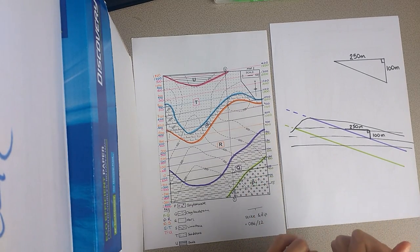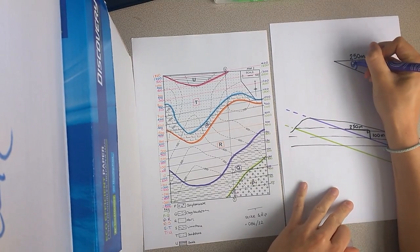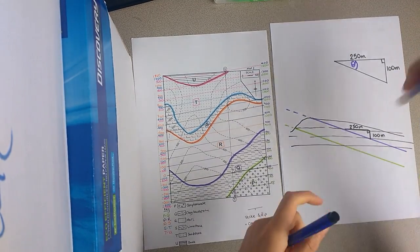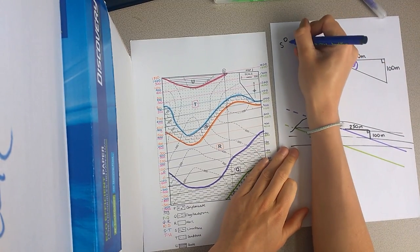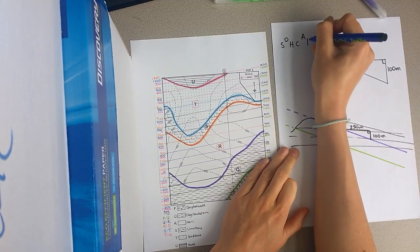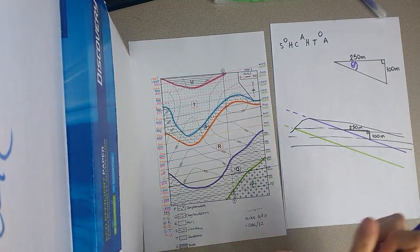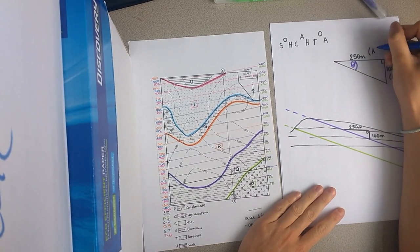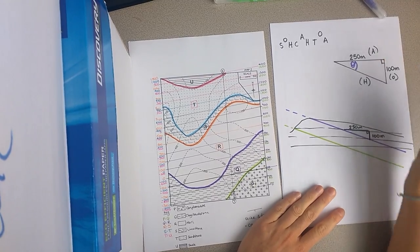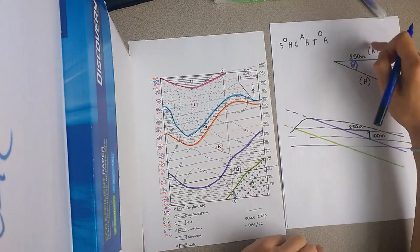And we are interested in this angle here. All right? So if you remember your trigonometry, okay? So here, this would be the opposite, this would be the adjacent, and this would be the hypotenuse. So because we have the opposite and the adjacent, we're going to use tan.